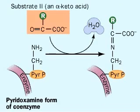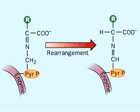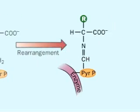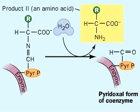A second alpha-keto acid forms a covalent bond, replacing the one that had split out. Another rearrangement ensues, producing an amino acid.